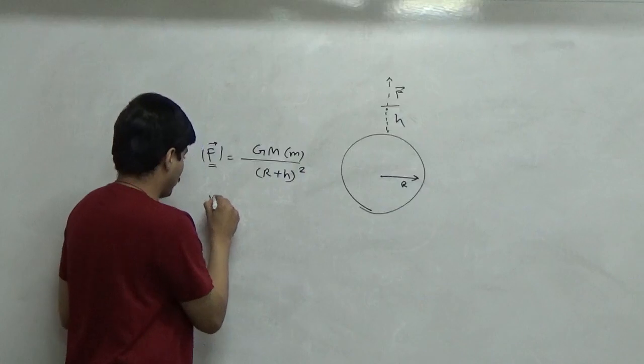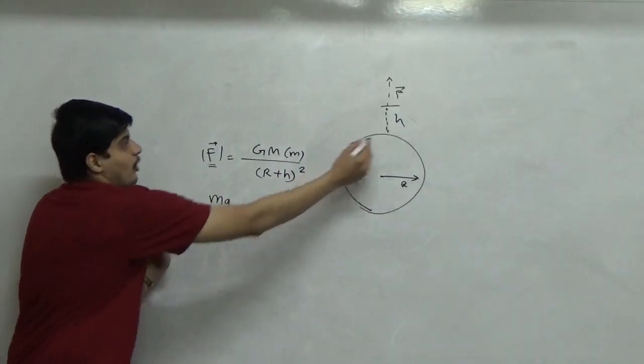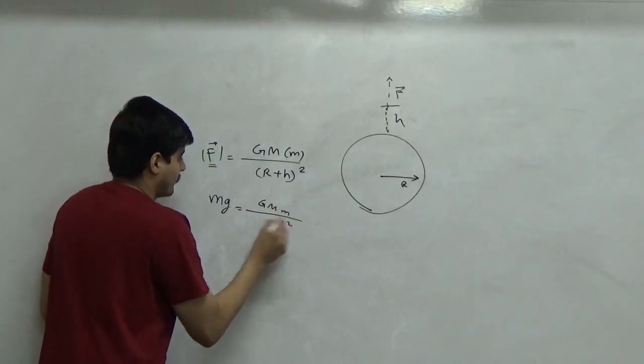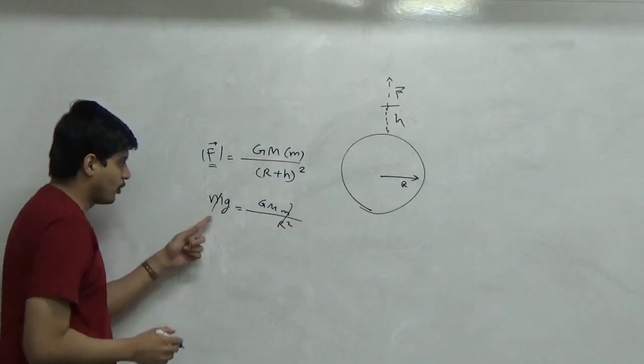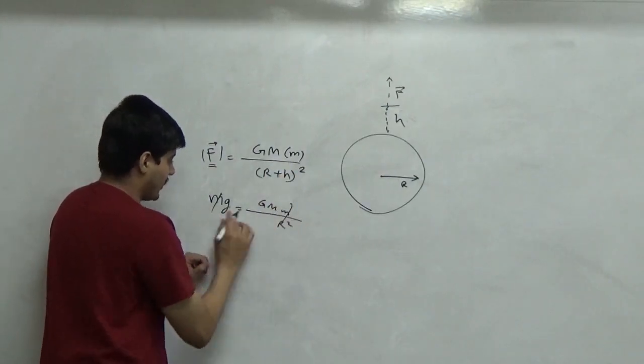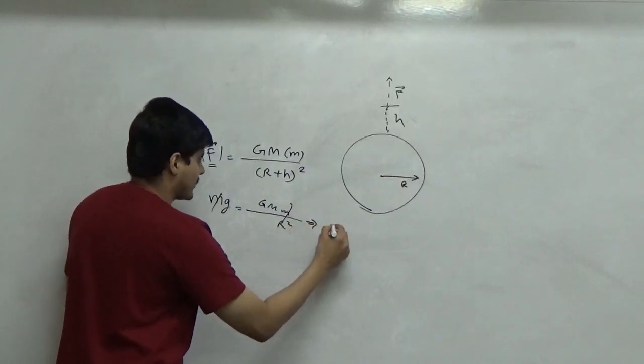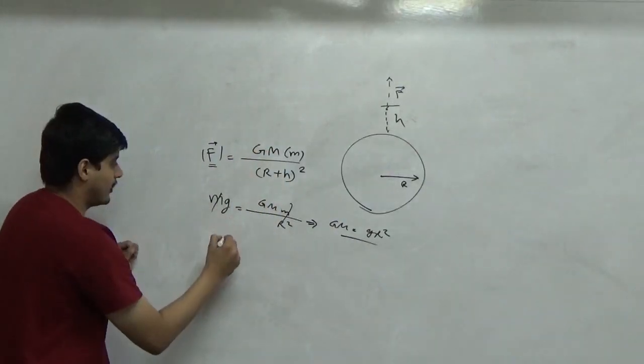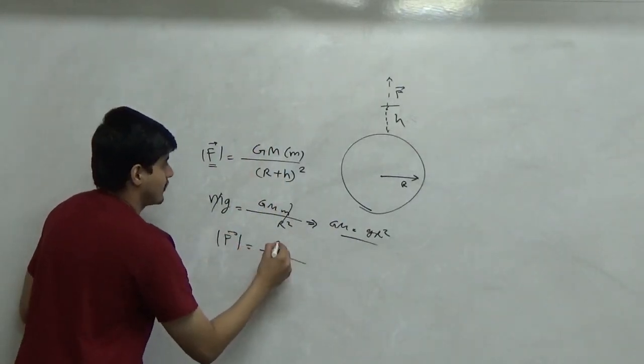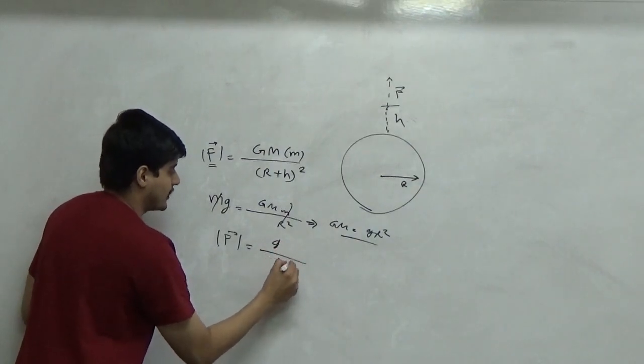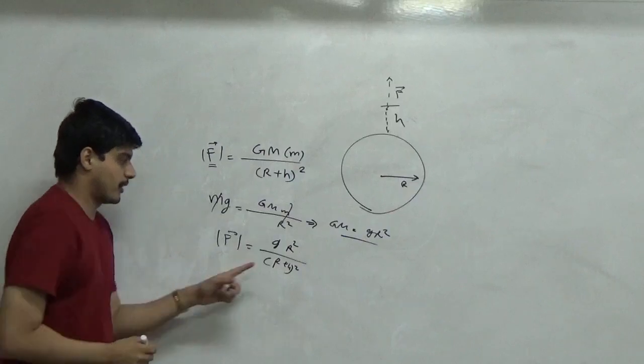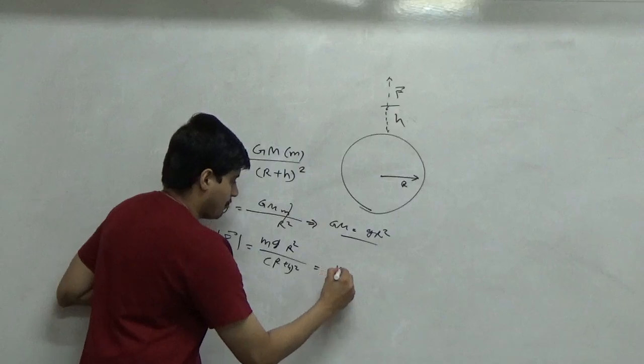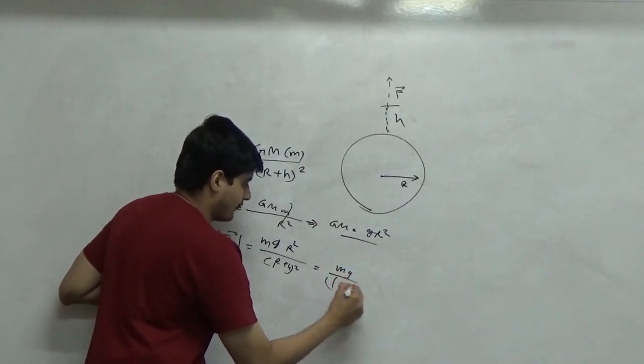Now I also know mg, which is the force exerted on the surface of earth on the same object, is simply Gmm upon r square. So I'm going to substitute Gm upon r square here as G. Therefore Gm is G times r square. Substituting it here I get f bar as G upon (r plus h) square times r square.